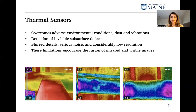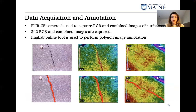This limitation encourages us to fuse infrared and RGB images into a single image. In this way, we can take advantage of both these imagery techniques. In this study, we use a Flir C5 camera, which is able to capture RGB and infrared images, and also combine these two sets of images into a single image.